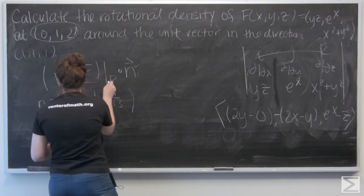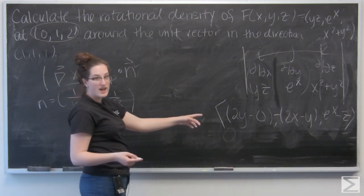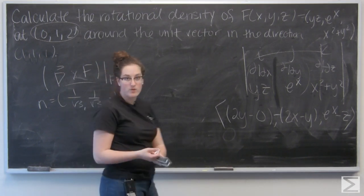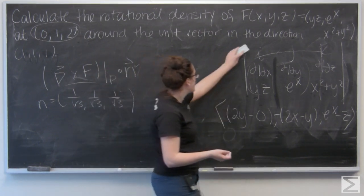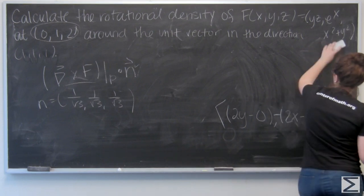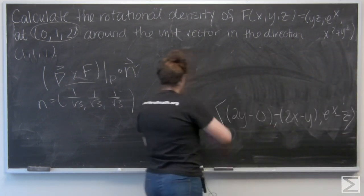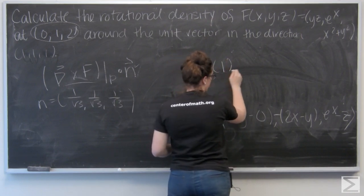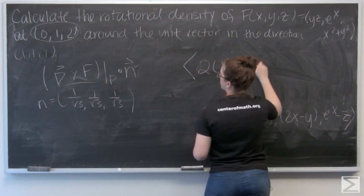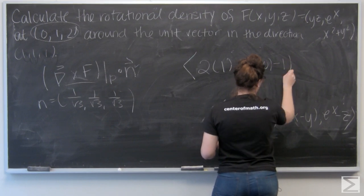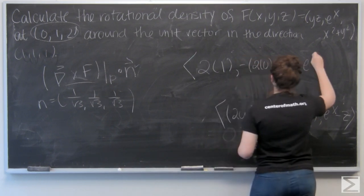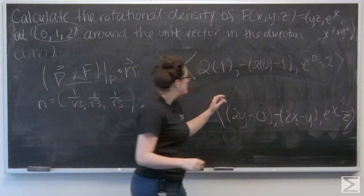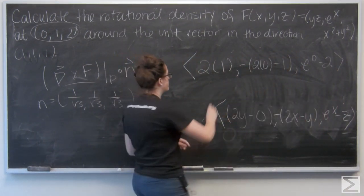All right. So now I just need to evaluate this at the point. So everywhere I see an x, I'm going to plug a 0, everywhere I see a y, a 1, and a z, a 2. So 2 times 1 for the i component, which is 2.